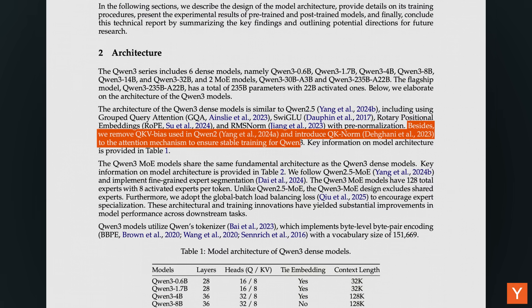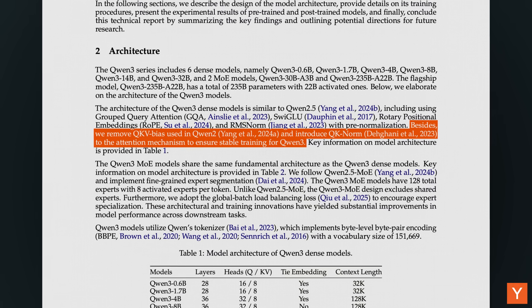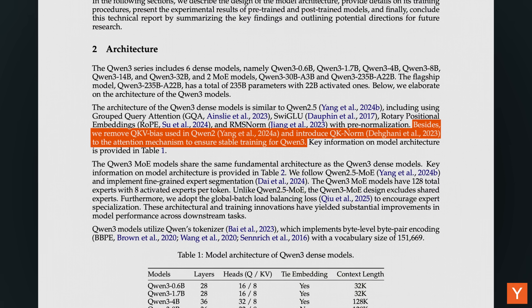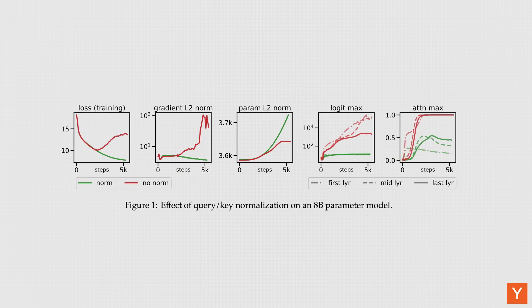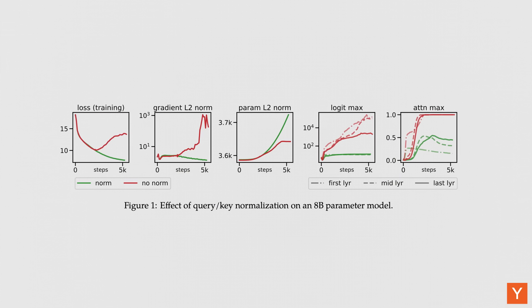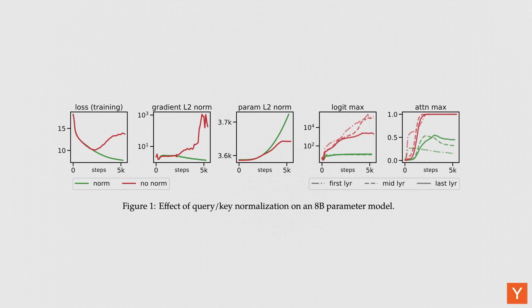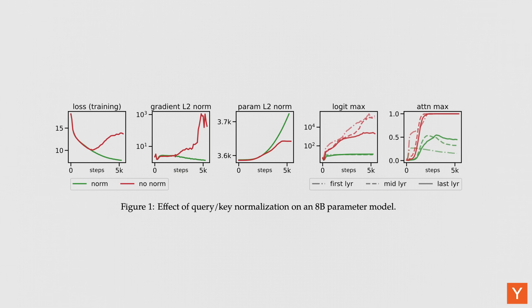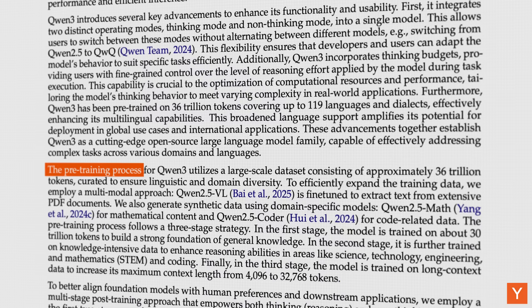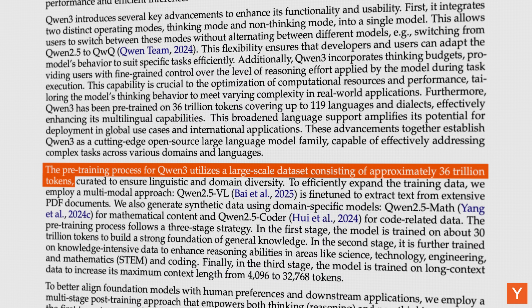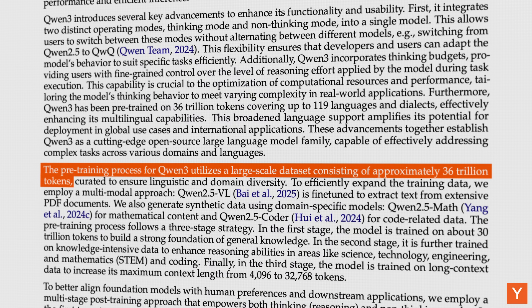One of the main things that sets Qwen3 apart from previous Qwen models is the way it controls the scale of the key, query, and value projections to keep attention scores stable at scale. It replaces QKV bias — a static offset that shifts KQV projections in previous models — with QKNorm, a normalization step that dynamically rescales the query and key vectors to maintain constant magnitudes. Dataset-wise, Qwen3 was trained on 36 trillion pre-training tokens, twice as many as the Qwen2.5 models.